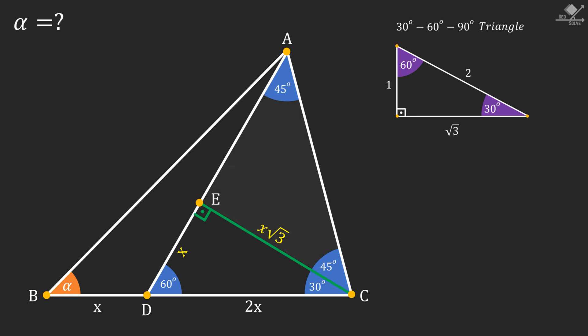Now notice that this shaded triangle is an isosceles triangle with 45-degree base angles. So its corresponding sides must be equal and line segment AE will also be X root three units.